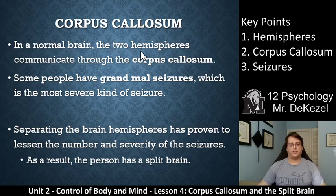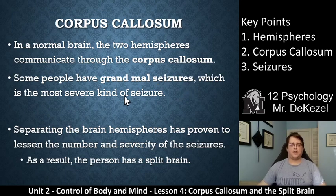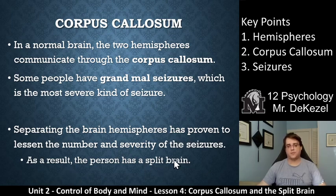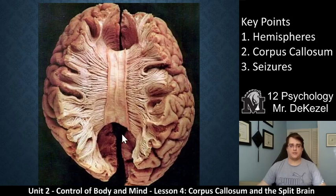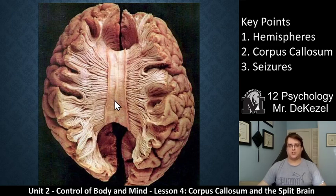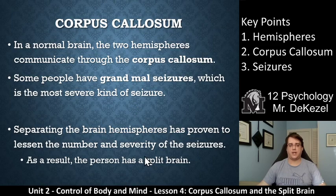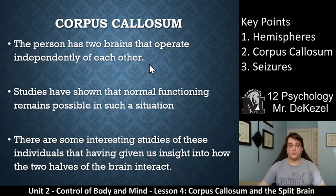In a normal brain, the two hemispheres communicate through the corpus callosum. But some people have grand mal seizures, which are very serious — the most severe kind of seizure. If you separate the brain hemispheres, or cut the corpus callosum, it is proven to lessen the number and severity of these seizures. But as a result, the person has a split brain. You cut this part and the two halves of the brain can't communicate anymore. The seizures are prevented, but the two halves of the brain cannot talk to each other — the person has two brains that operate independently of each other.